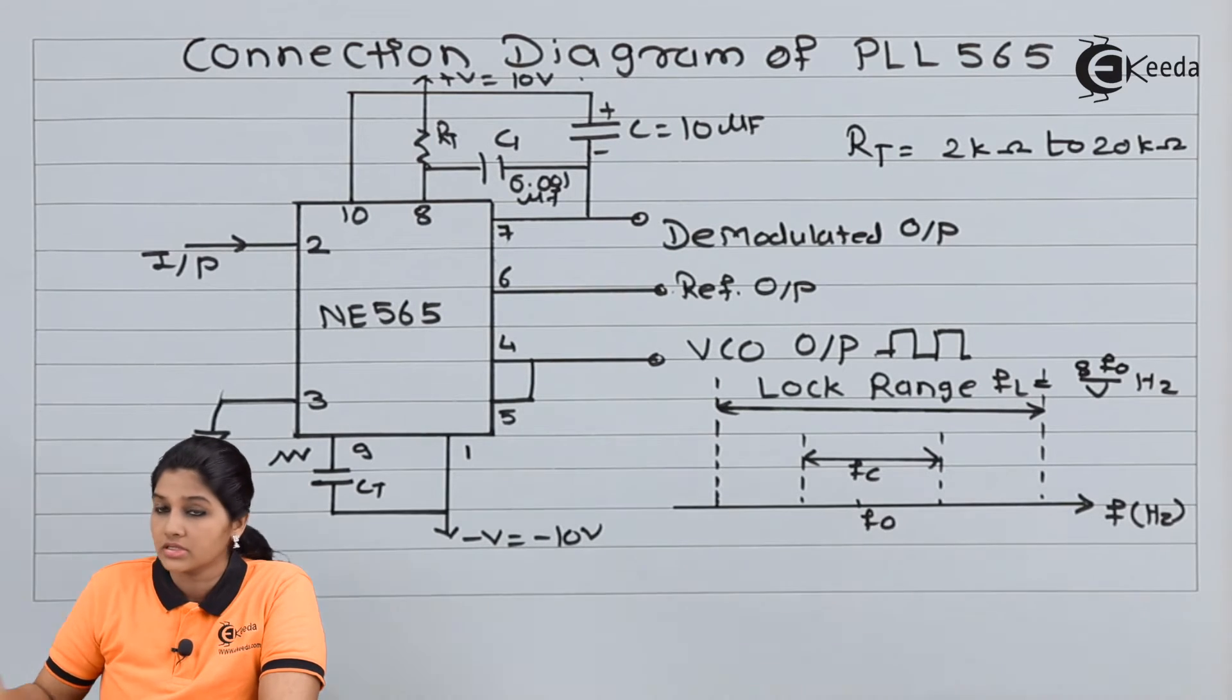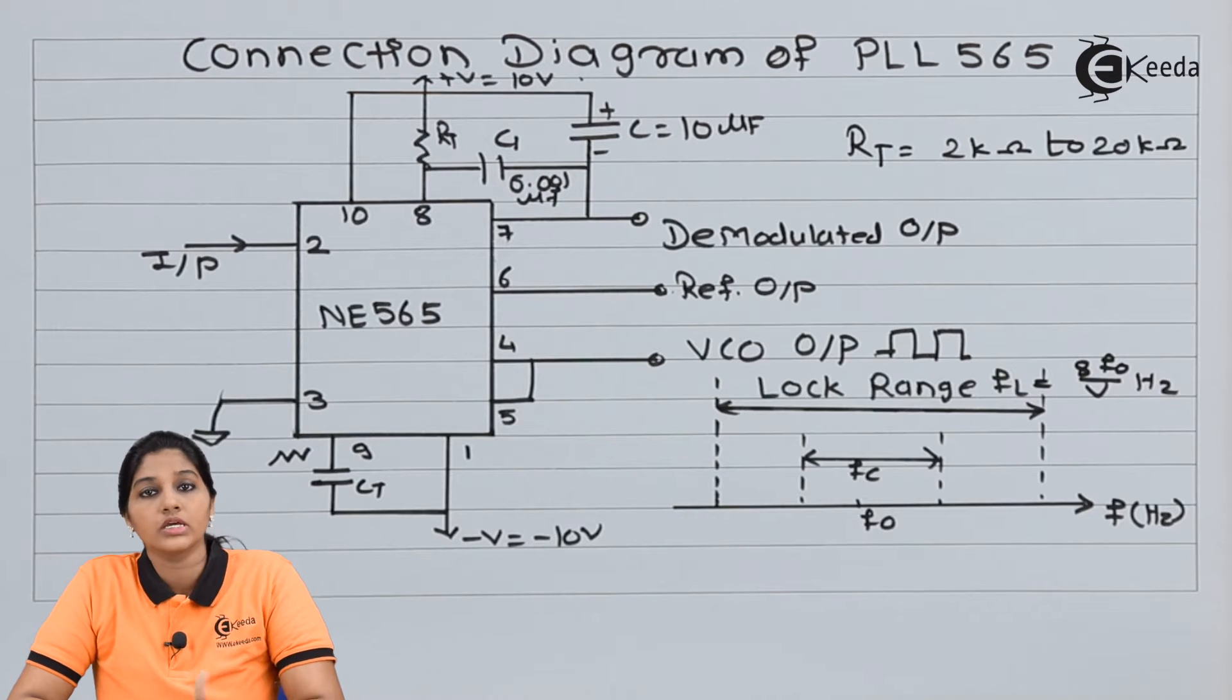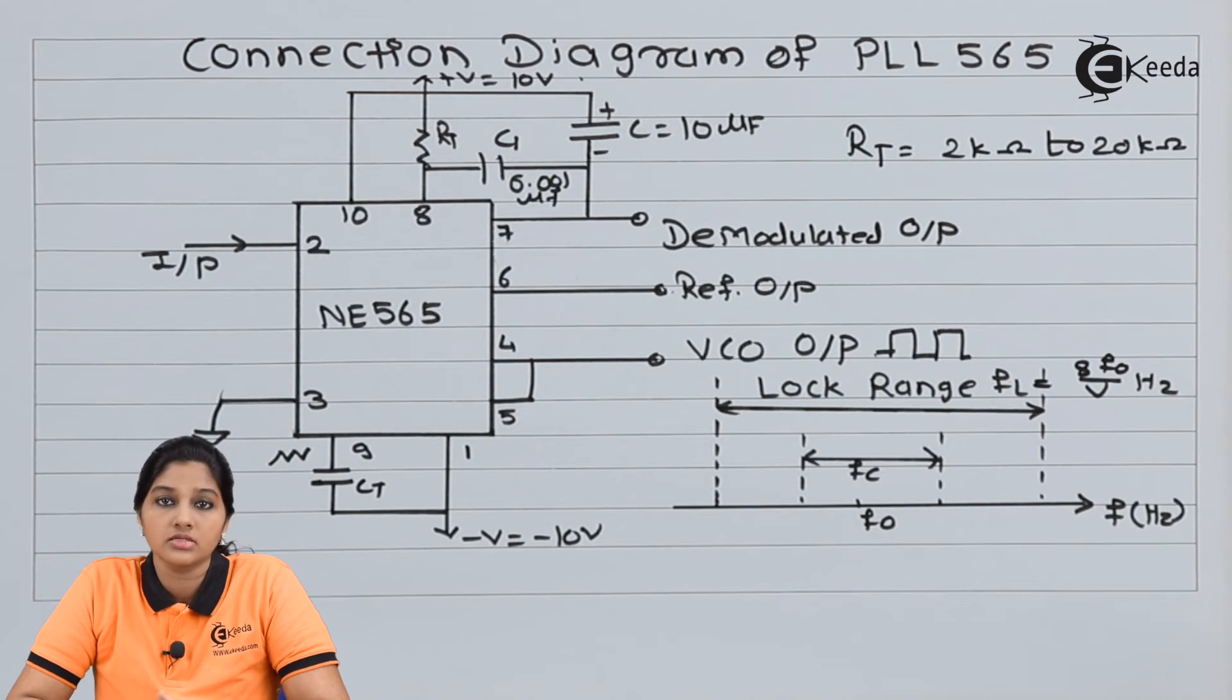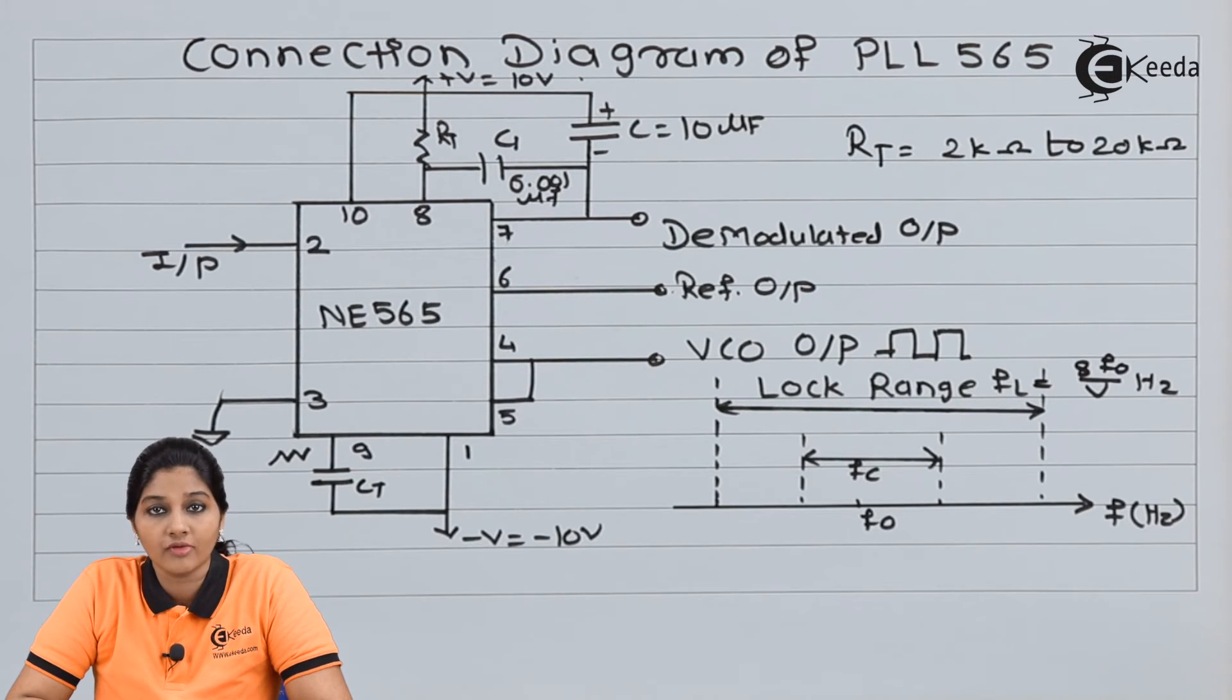The capture frequency FC is always less than the lock range frequency FL. So this is how we can connect the IC NE or SE565 in the circuit. I hope you understand the topic of connection diagram of IC565.